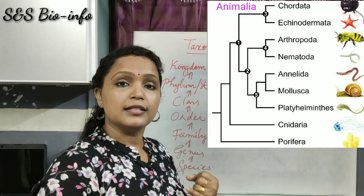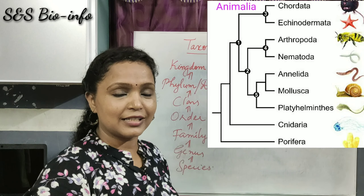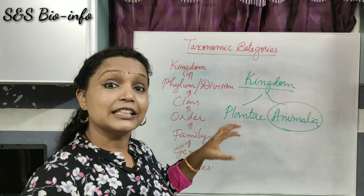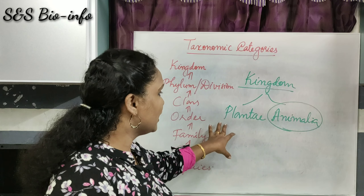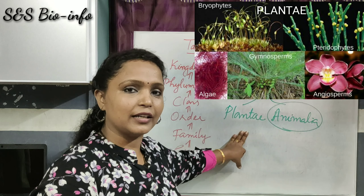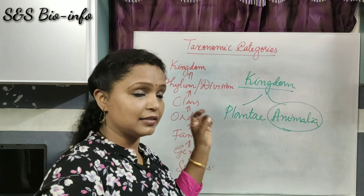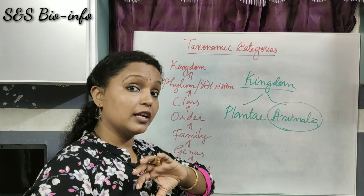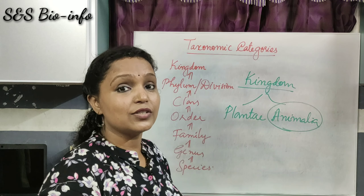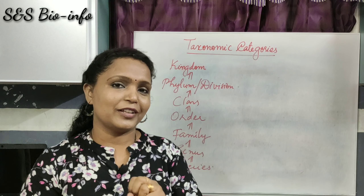The kingdom Animalia consists of various phyla like Porifera, Coelenterata, Platyhelminthes, Aschelminthes, Annelida, Arthropoda, Mollusca, Echinodermata, Hemichordata, and Chordata. Similarly, Kingdom Plantae comprises Bryophyta, Chlorophyta, Thallophyta, Pteridophyta, Gymnosperms, and Angiosperms. Kingdom is the highest and largest category.